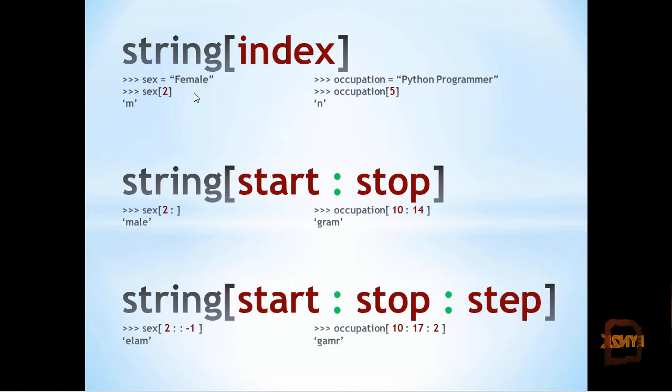So if we get the third member from female, we'd have to put the number 2 inside the braces, not the number 3, getting the character M. On the right here, we are getting the sixth member from Python programmer, being N.